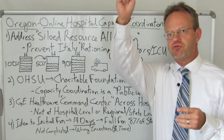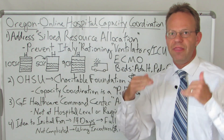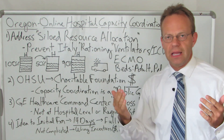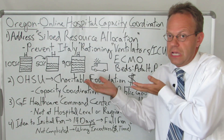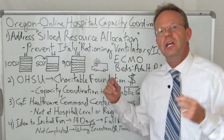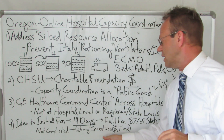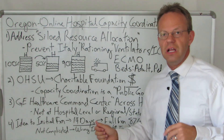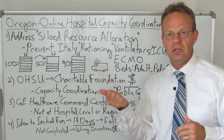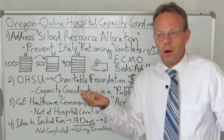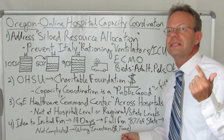Landing a rocket on a boat in the middle of the Atlantic Ocean — that's complicated. What SpaceX does is complicated. Coordinating beds across hospitals is not that complicated. It wasn't an issue of complexity; it was an issue of incentives. There was no incentive for those hospitals to ever do this before, and they didn't want to spend the money or the time on it.